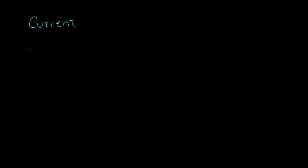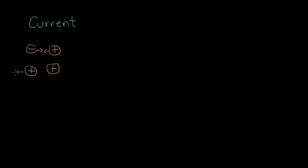Now we're going to talk about the idea of an electric current. The story about current starts with the idea of charge. We have two kinds of charges: positive and negative charge. We know if they're the opposite sign, there will be a force of attraction between them. And if they have two like signs — two charges that are both positive — these charges are going to repel each other. So like charges repel and unlike charges attract. This is the basic electrostatics idea.